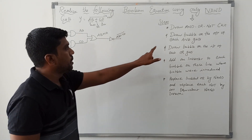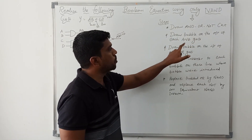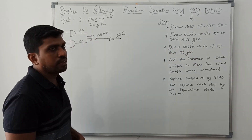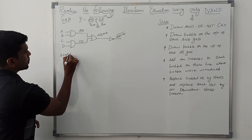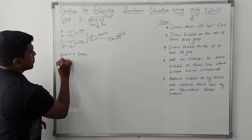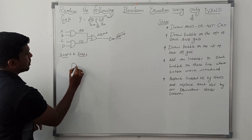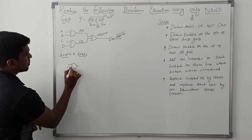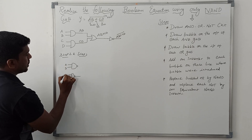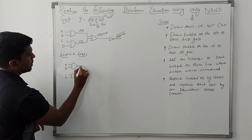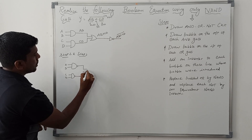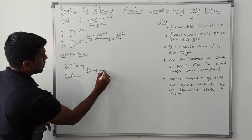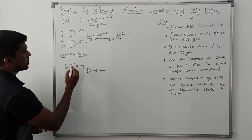Now step 2 and step 3: draw a bubble on the output of each AND gate, and draw a bubble on the input of each OR gate. So we place bubbles on the outputs of both AND gates, with inputs A, B, C, D, and one inverter at the output.